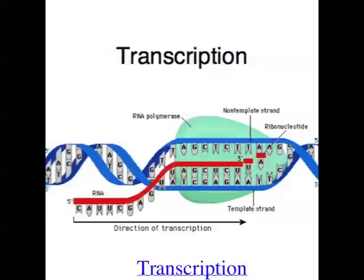As DNA is found in the nucleus of the cell, transcription obviously happens in the nucleus. A special enzyme called RNA polymerase binds to a specific area of the DNA called the promoter region. Once the RNA polymerase and some other transcription factors have bound to the promoter region, that RNA polymerase zips along one single strand of the DNA molecule to create or transcribe a single strand of messenger RNA.